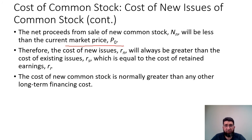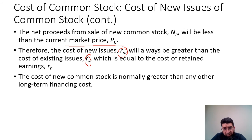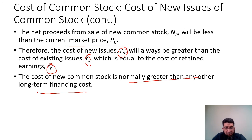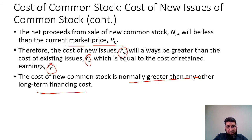The net proceeds NN will be less than the current market price since flotation costs reduce the amount received. Therefore, the cost of a new issue RN will always be greater than the cost of existing issues RS, which equals the cost of retained earnings RR. The cost of new common stock is normally greater than any other long-term financing cost, and dividends are not tax deductible.